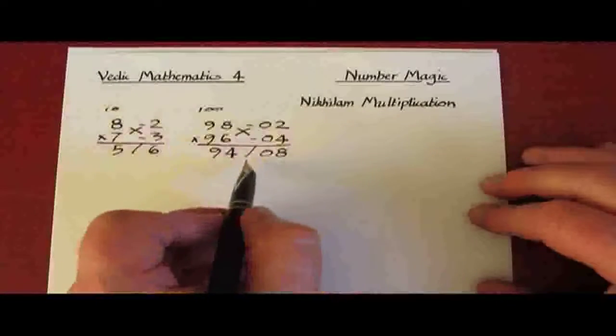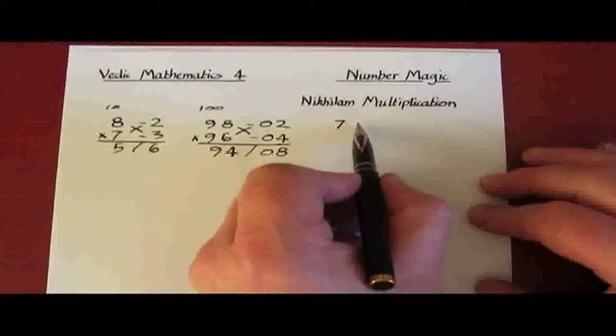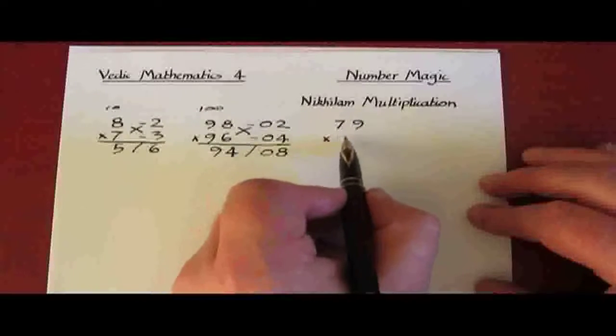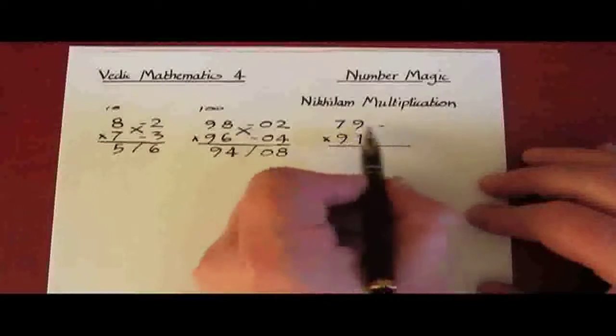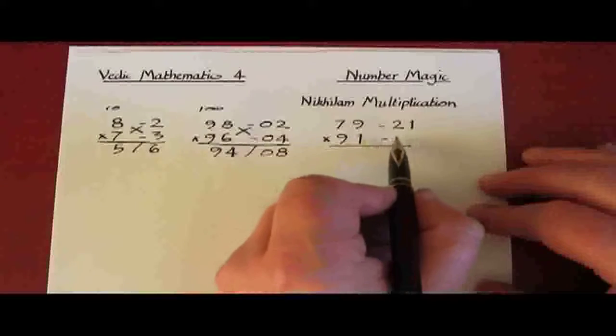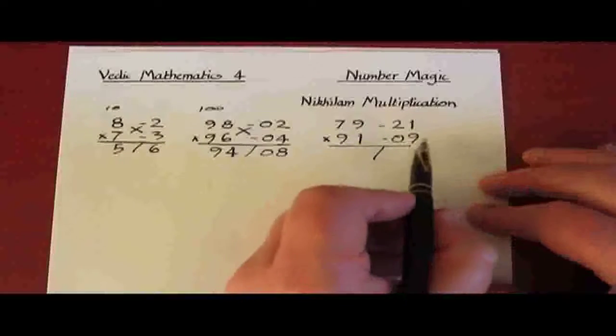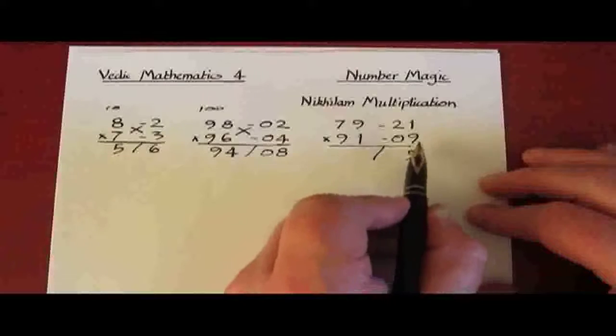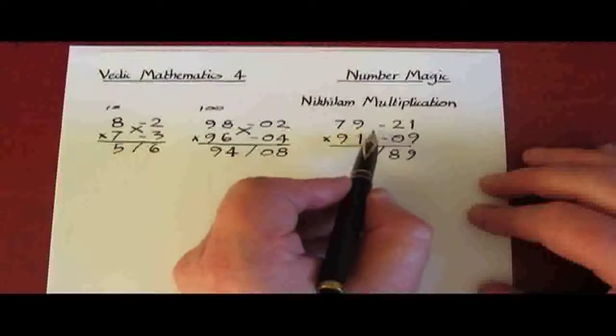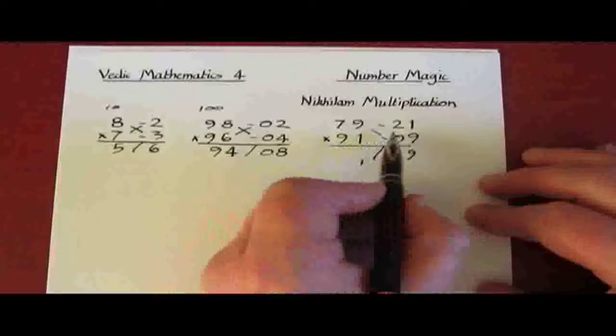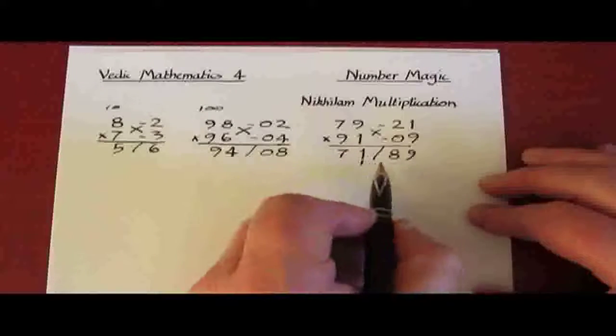Now one other little further development here. If I take the example 79 multiplied by 91, the product on the right is going to have more than two digits as we'll see in a moment. The deficiency here is 21 and here is 09. And we've got to find 9 times 21. Well we can do that digit by digit. 9 ones are 9, and 9 twos are 18, so that's an 8 with a 1 to carry over to the left. And now we can cross subtract, 79 take away 9, or 91 take away 21, leaves 70. Add in the carry 1 and we've got 71. So that's what to do in that case.